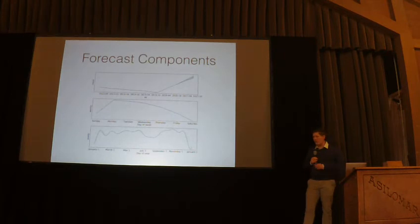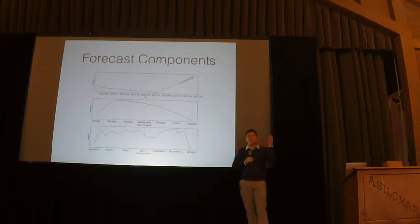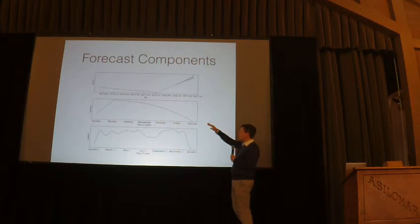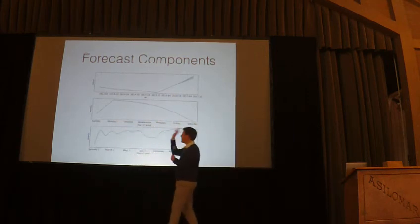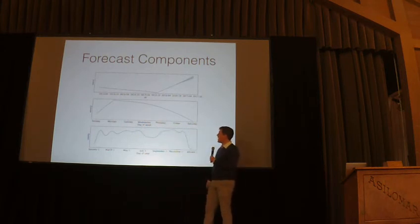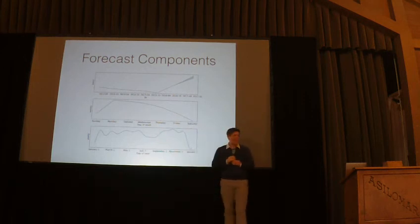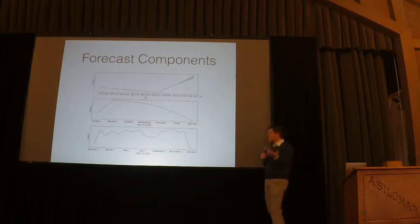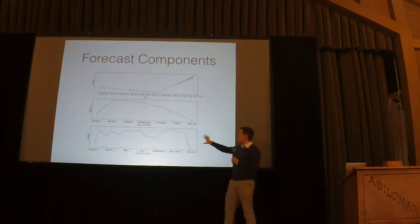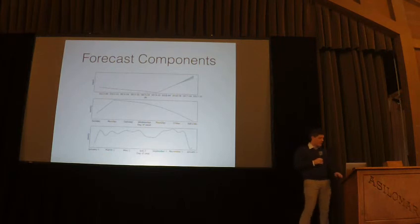One of the advantages of this decomposable model is that we can look not only at the estimates but also at each of the components. We can look at the trend — this slow decline and then the sharp increase upward. We can see the weekly seasonality component — the model has estimates for the Monday and Tuesday effect and we can see it decay throughout the week. And then the yearly seasonality — we can really clearly see this drop in the summer and the really big drop at the end of the year. This provides insight — not only what's happening but kind of why it's happening.